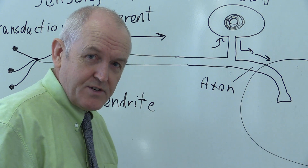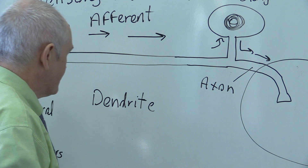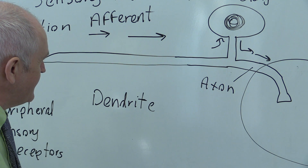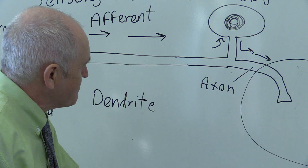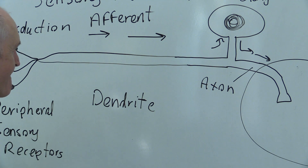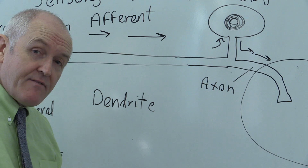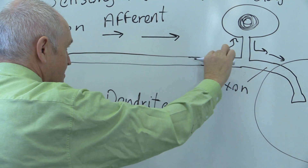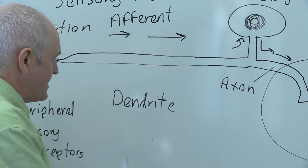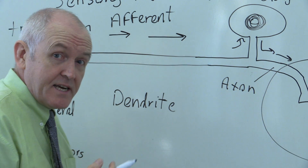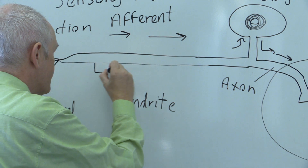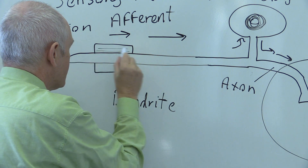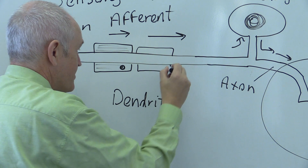So motor neurons have short dendrites and long axons; sensory neurons have long dendrites and short axons. The sensory neuron also needs rapid transmission of the electrical nerve impulse, and it's good to have the dendrite protected and nourished. To facilitate those things, we have the myelin sheath, again made up of Schwann cells wrapping themselves around the fibers — in this case the dendrites — just as they did with the motor neurons.